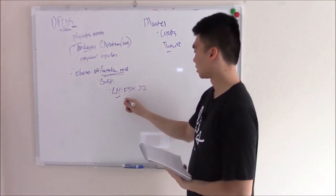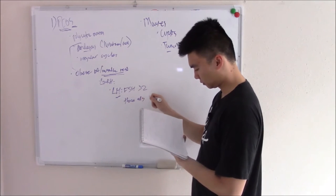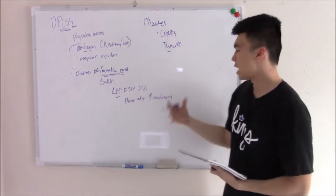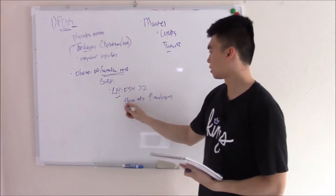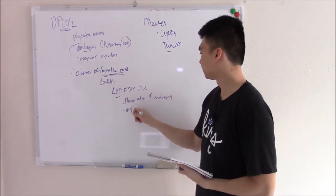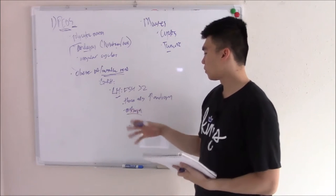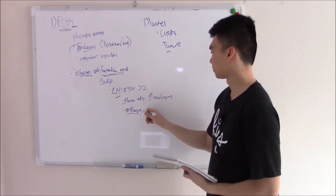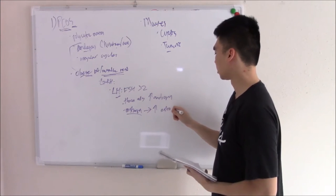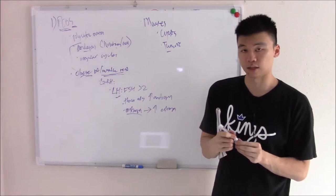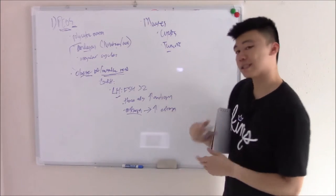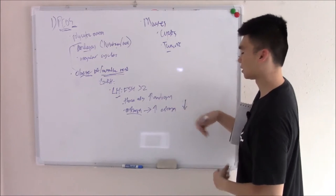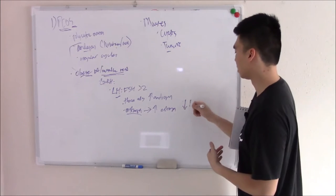What does LH do? It causes your theca cells to produce more androgen. Androgen gives you the hirsutism and acne. Androgen also gets converted to estrogen by adipocytes. In obese patients with more adipocytes, they have increased estrogen. Estrogen can cause endometrial hyperplasia and can also negatively feedback on FSH, saying we don't need more FSH.